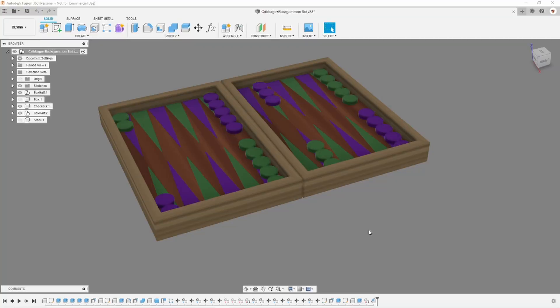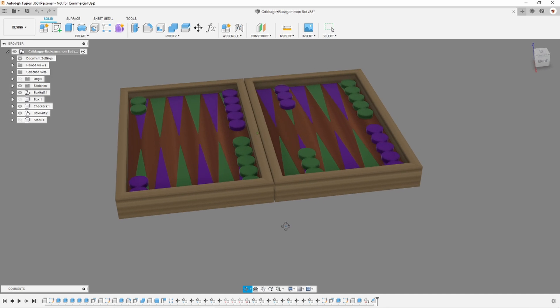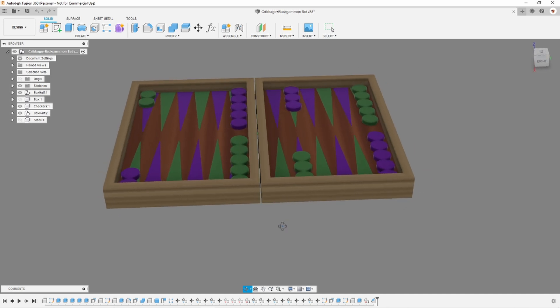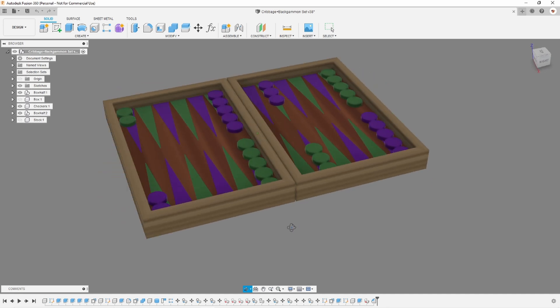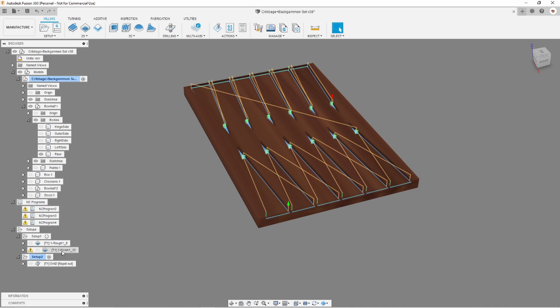I designed the project using Fusion 360 and I also exported this 3D model to Blender software in order to make that nifty 3D animation that I showed at the start. I created this roughing tool path using a 1/8 inch bit to remove most of the material from the pockets in the backgammon board and then I created a finishing tool path using a much smaller bit to remove just the remaining material that I need in order to get these sharp points.